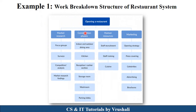Now, here are different examples of WBS structure. This is a work breakdown structure of a restaurant system. First, the project name is 'Opening Restaurant,' then it is divided into multiple tasks. The first task is market research — you need to do research before opening a restaurant, with subtasks like survey, identifying competitors, market research, focus groups, etc. The second task is the construction phase — construction of the restaurant, including indoor/outdoor dining area, kitchen, reception, storage room, washroom, parking lobby, etc. The third is human resources, with subtasks like staff recruitment and staff training. The last is marketing, with activities like celebrity endorsements, advertising, brochures, etc. This WBS shows the proper organization of the project and makes it easy to identify which tasks and activities need to be performed.